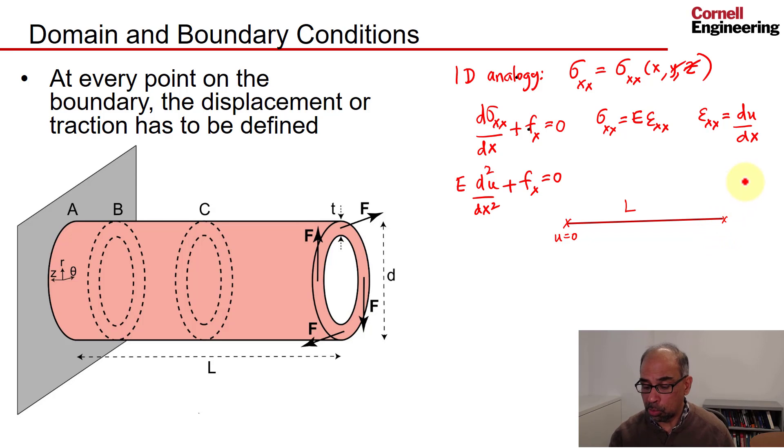So we would say we know sigma xx has to be equal to sigma naught, which would be the applied force per unit area on that end.